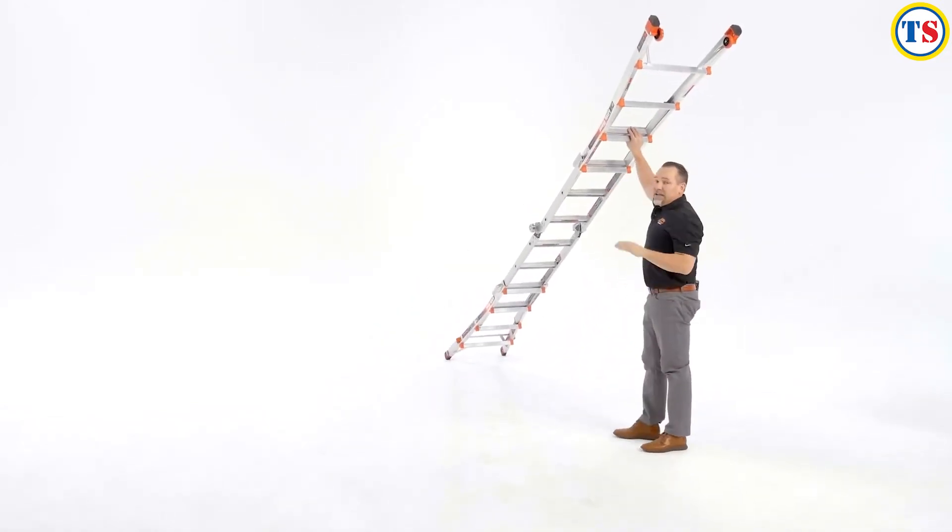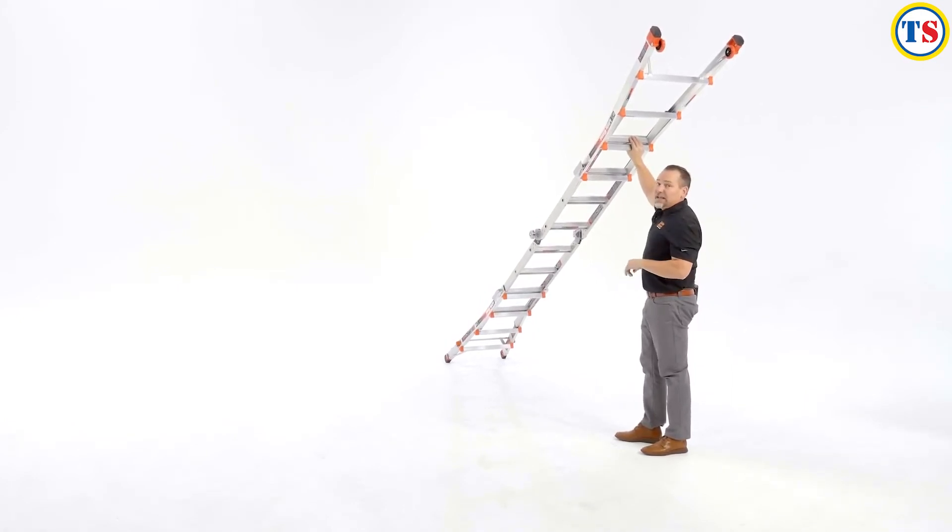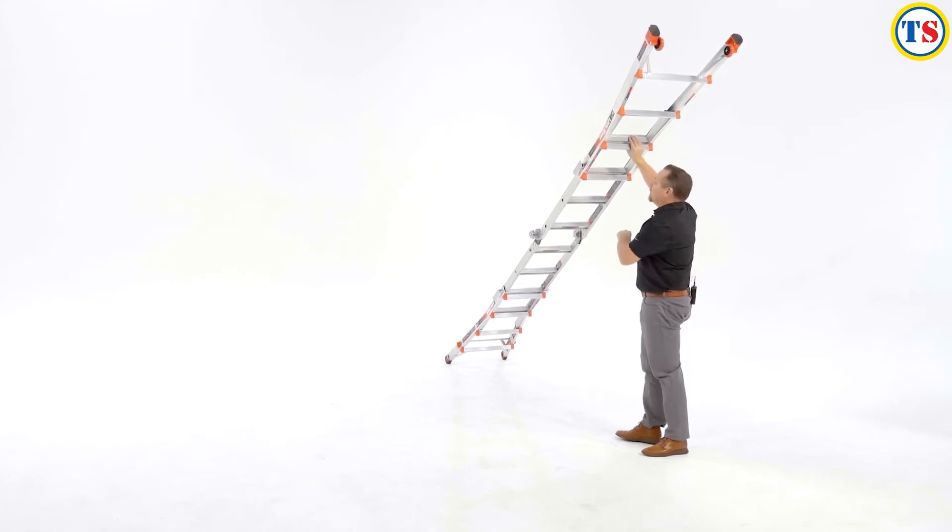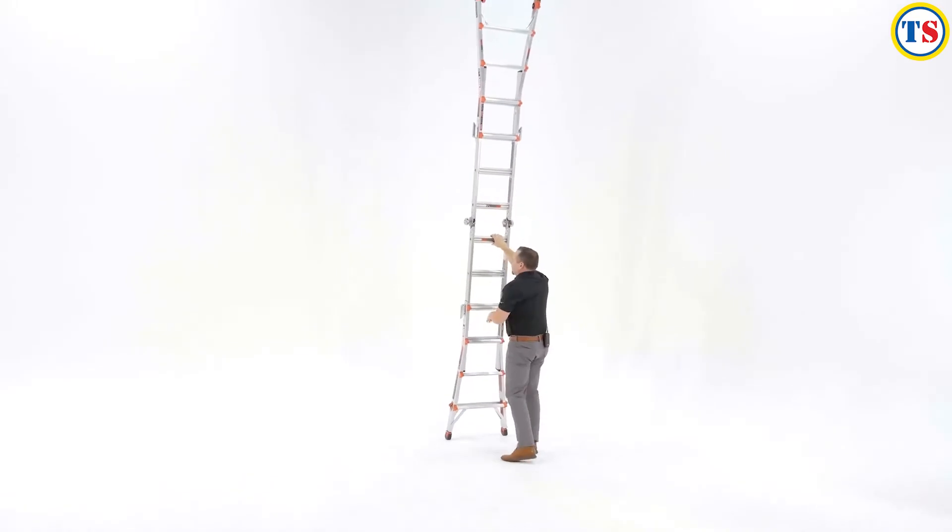Then turn the ladder over 180 degrees so that you're facing the rungs. This is where it's a good idea to put the bottom of your extension ladder against the foundation or wall that you're leaning the ladder against. And hand over hand, bring it up to its vertical position.